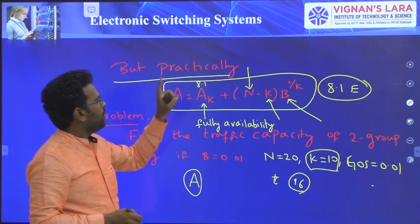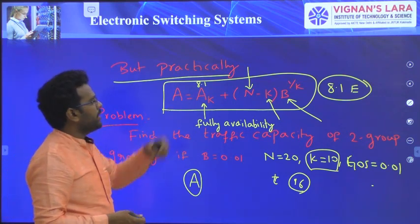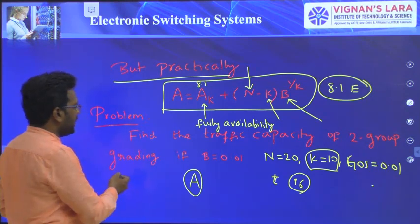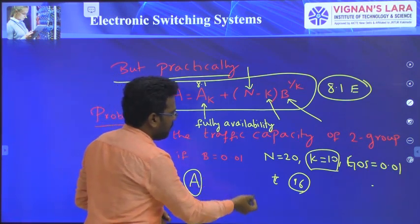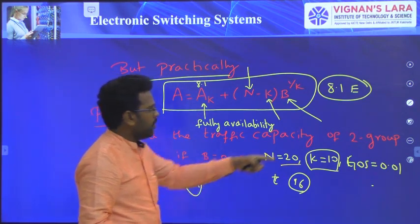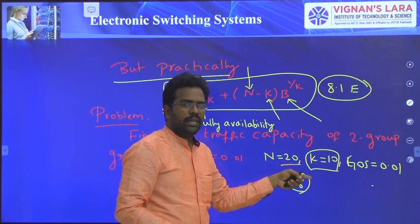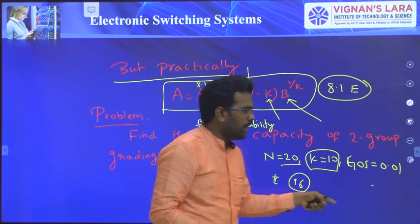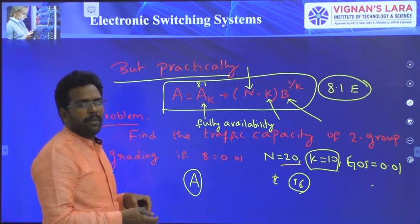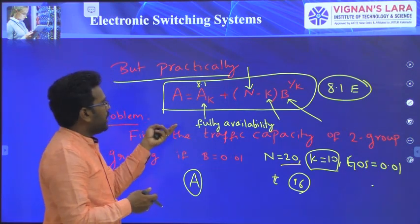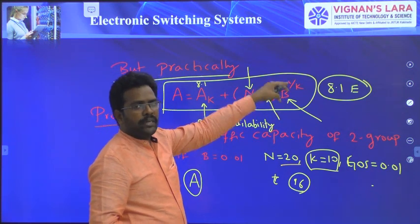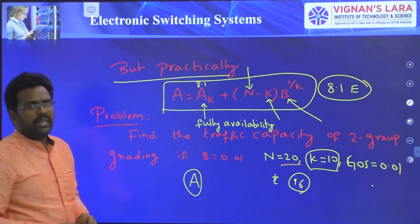One problem is given: find the traffic capacity of a two-group grading if B = 0.01. For the previous problem: N = 20, K = 10 (availability), B = 0.01 (grade of service). From the table for 15 trunks it is approximately 8.1, so for 16 trunks A_K ≈ 8.1. Then traffic = 8.1 + (20 − 10) × (0.01)^(1/10), which is the final traffic handling capability of the trunks.